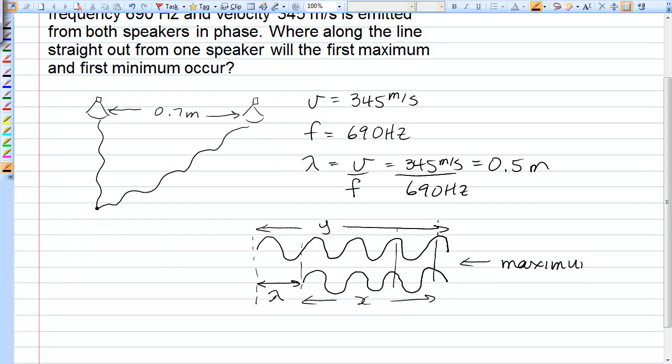If those two waves were on top of each other at some location, it would be a maximum, which means that we have X plus the extra wavelength that one wave travels must equal the distance the other wave travels. So if we go up to our picture here,